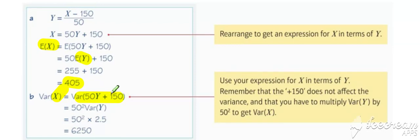So remember that 150 doesn't play a part in the calculation and we square the 50 that's our A. So A squared times the variance of Y, and that gives us our answer of 6250.